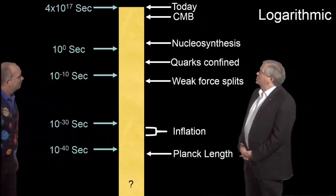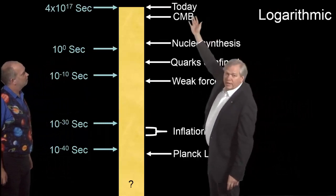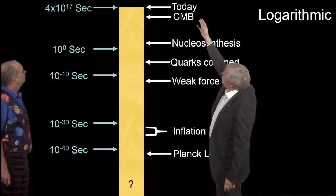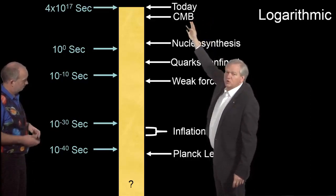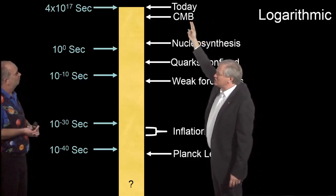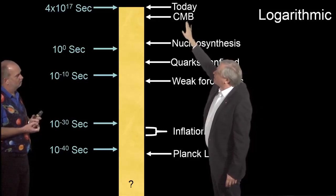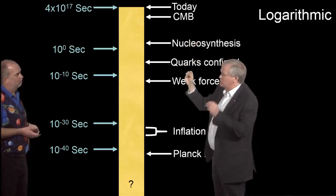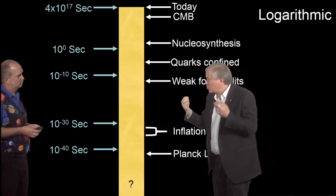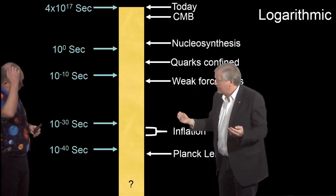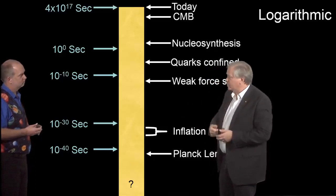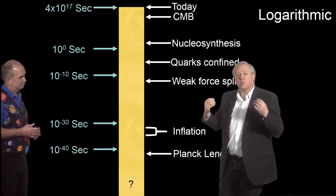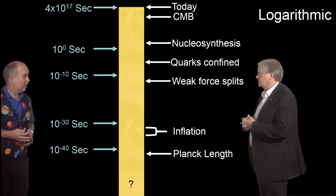So we start up here today, 13.8 billion years after the Big Bang, which is about 10 to the 17 seconds. Then we go back 380,000 years after the Big Bang, the formation of the cosmic microwave background. That's when the universe cooled to about 3,000 degrees and the electrons suddenly were combined with their protons and hydrogen recombined. We're going to talk about that at great length later in this course.